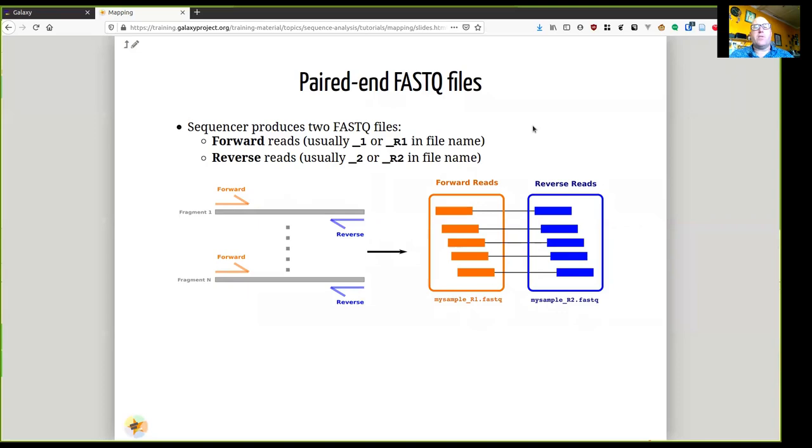When you get data from the sequencer, it typically comes in pairs of FASTQ files, one file for the forward reads and another for the reverse, with a number like a 1 or a 2, determining whether these are forward or reverse reads.